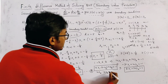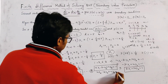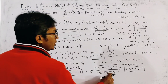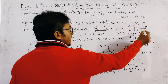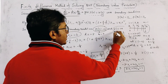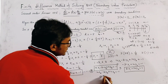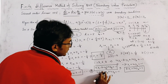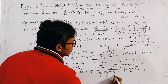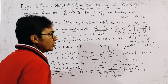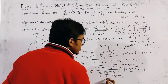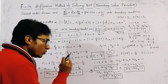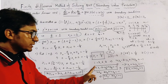Putting i = 3 gives: 16y₂ − 31y₃ + 16y₄ = −1. Substituting y₄ = y(1) = 0 reduces this to: 16y₂ − 31y₃ = −1. This is the third simultaneous equation.